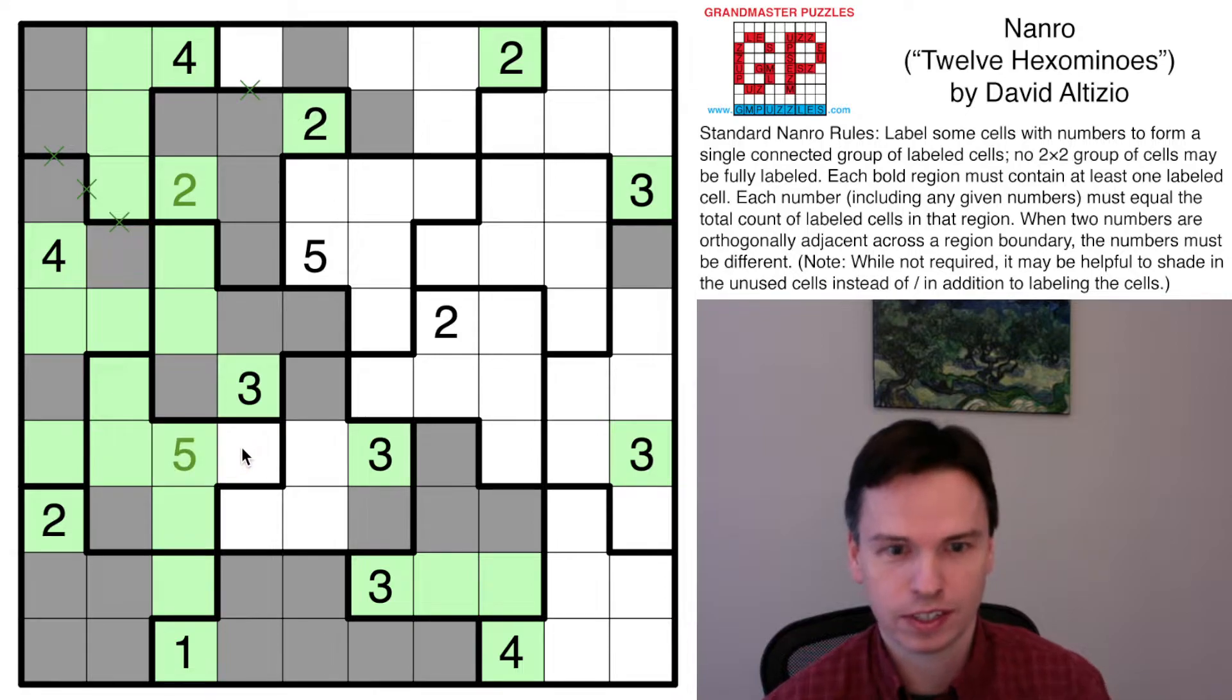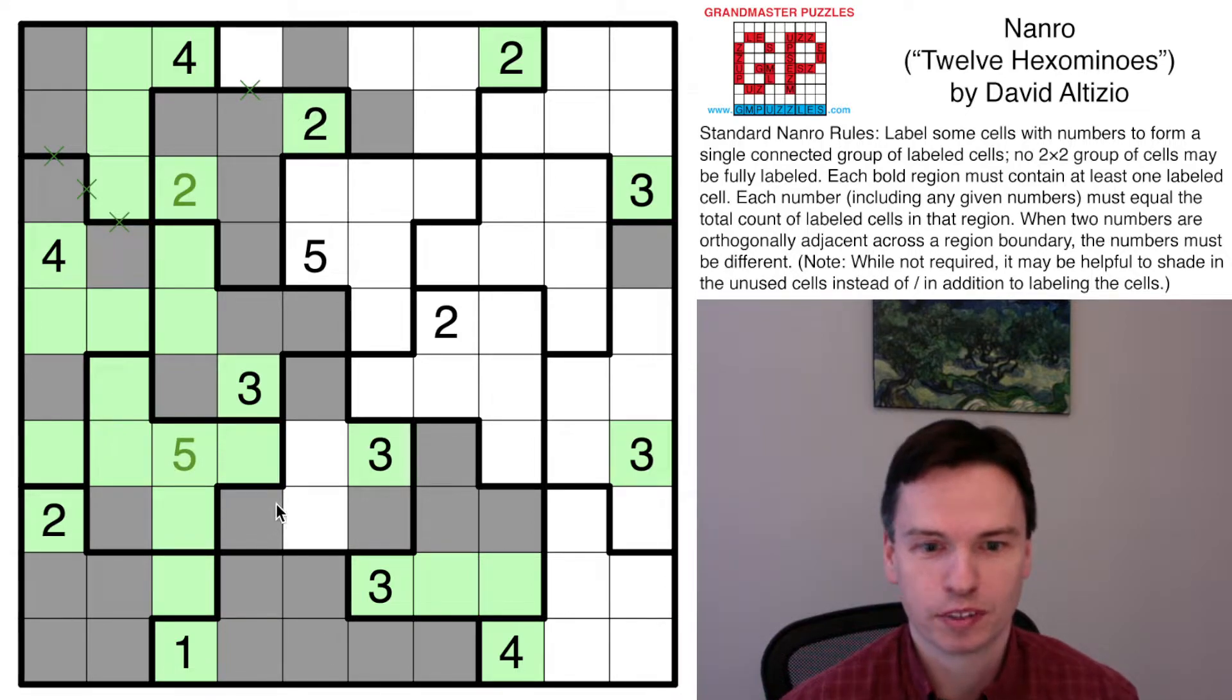I've got a group of size four near a group of size four, so this now has to grow to be as large as five. Mark this in, mark this off. This group of size three must take these cells. Connectivity still forces this, and that completes this shape.